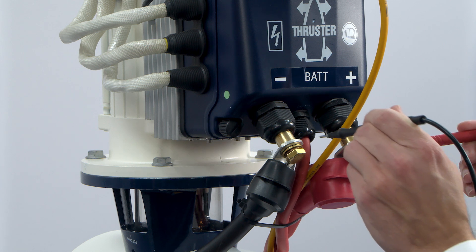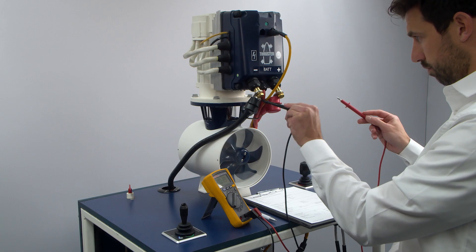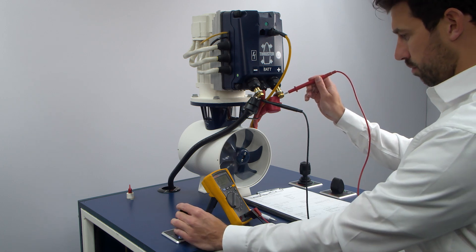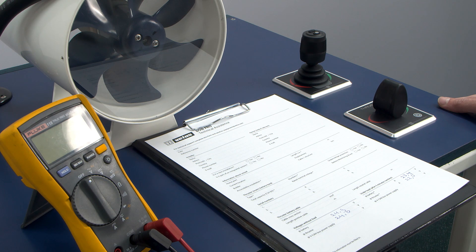Next, we'll check the voltage at the thruster. Measure it without any load and write down what you find. Then, measure it again while the thruster is under load. Make sure to record both sets of measurements in the log.